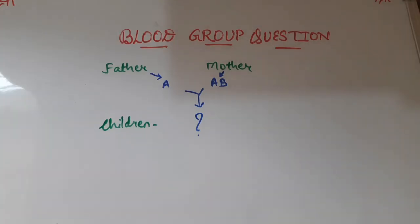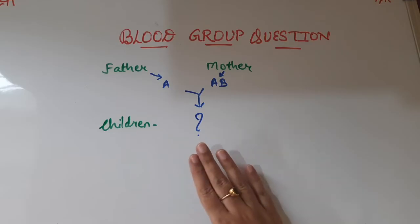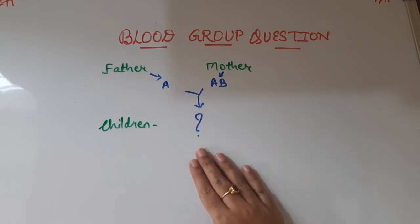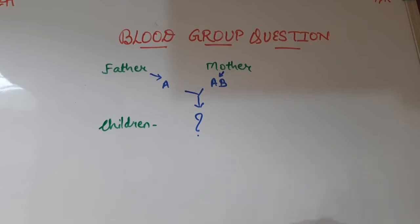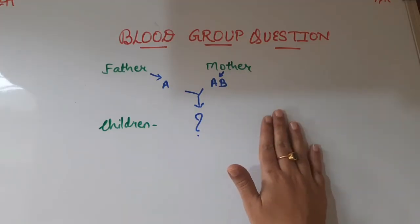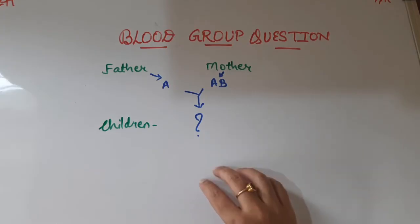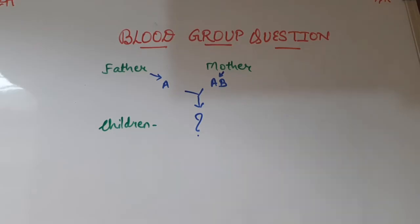Hello everybody and welcome back to my channel Query Solution. To continue our discussion on blood group questions, we are taking another example today. There is already a video on my channel where we saw the example where father belongs to blood group A and mother belongs to blood group B. Today we are going to see another example where father belongs to blood group A and mother belongs to blood group AB — what are the possibilities of blood group in the children?